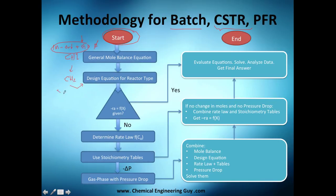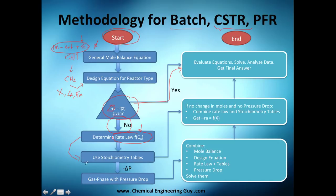The design equation can be expressed in terms of conversion, concentration, or flows. In chapter two we saw that if you have the rate of reaction as a function of conversion you can solve it directly — but here we will use rate laws, which express the rate of reaction as a function of concentration of the species being reacted. We'll also use the stoichiometric tables from chapter three.